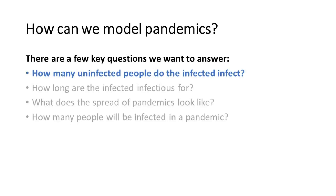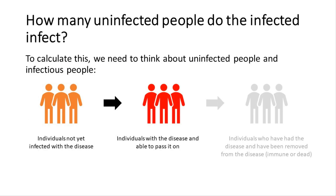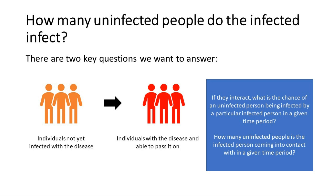The first question is: how many uninfected people do the infected infect? We're going to focus on two groups to answer this — the susceptible individuals and the infected individuals. There are two big questions here: if an infected person interacts with an uninfected person, what is the chance that they infect them? And how many uninfected people is the infected person coming into contact with in a given time period, let's say a week?